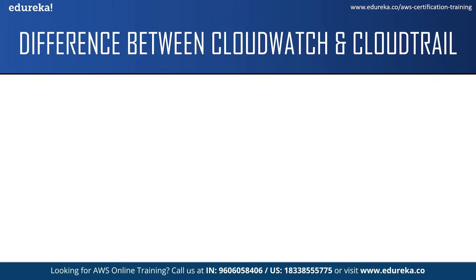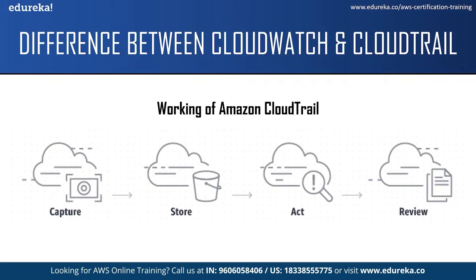Now let us move on to the working of Amazon CloudTrail. CloudTrail captures or records user activities in the AWS services and calls them CloudTrail events. It delivers these events to the CloudTrail console and stores them in S3 buckets. After the events are delivered to your CloudTrail console, you can review all recent activities that have happened in your account. You can also use CloudWatch events and alarms to set important automatic actions.